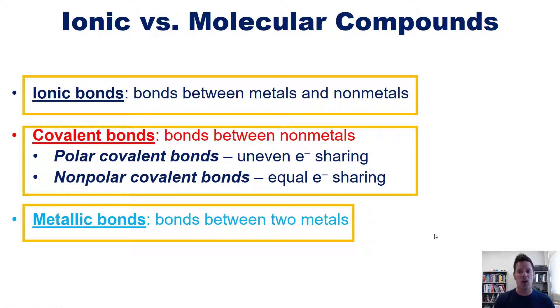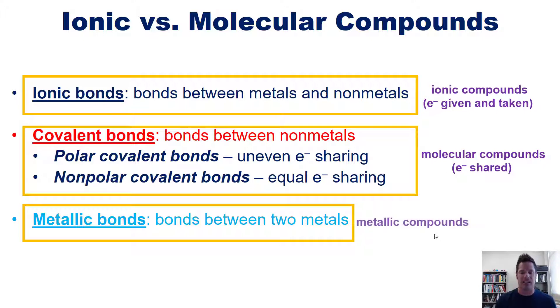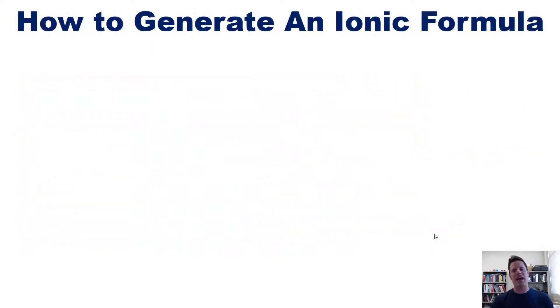Now, compounds that contain ionic bonds are called ionic compounds. These are ones in which metals give away electrons and non-metals take them. In contrast, molecules that are all non-metals and covalent bonds are called molecular compounds. They're not called covalent compounds. While molecules that contain metals in them have metallic bonds and are called metallic compounds. We won't discuss these until a later chapter. With that background reviewed, I now teach you how to generate an ionic formula.